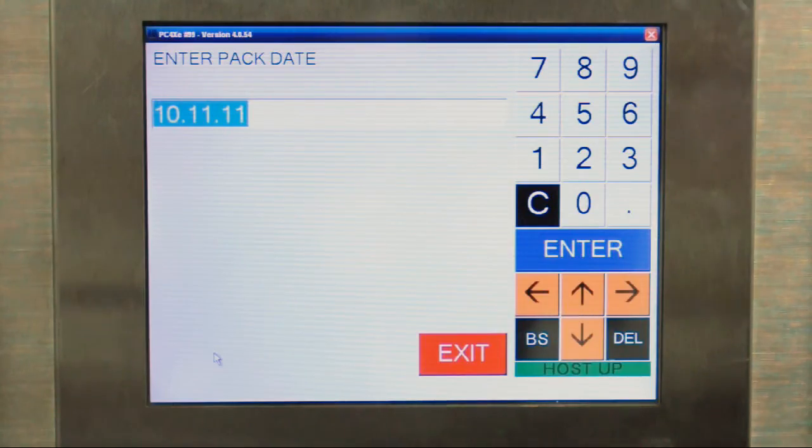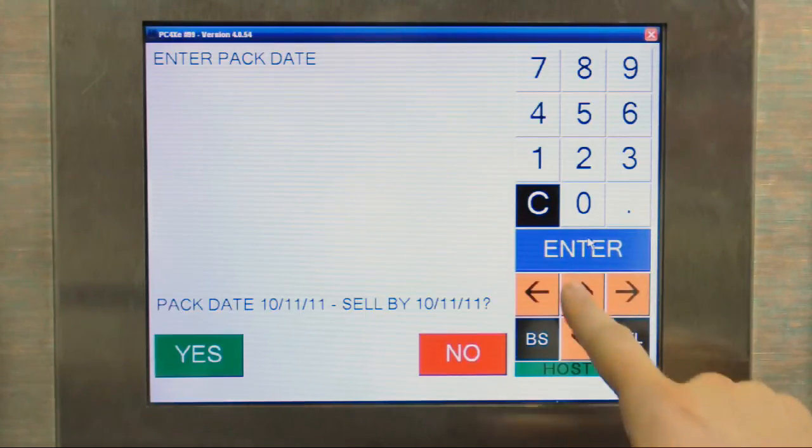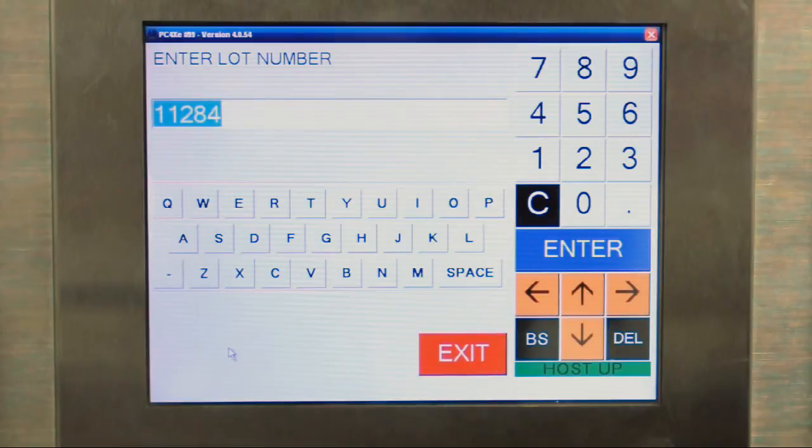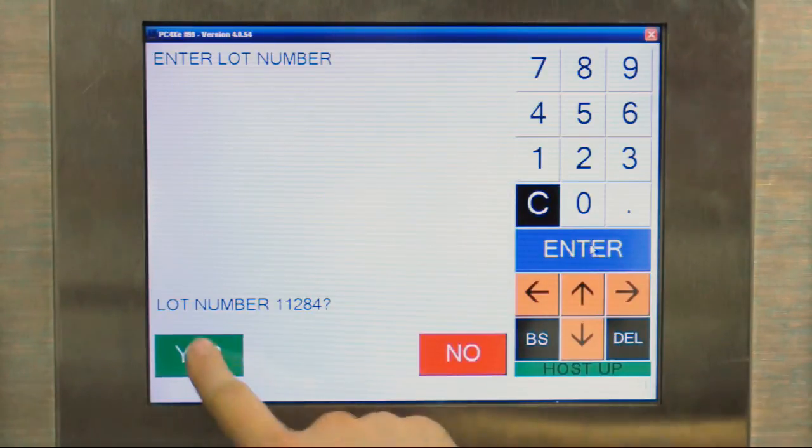Now it asks for the pack date. The pack date defaults to today's date. Vistatrack has the flexibility to change this if needed to match your production schedule. Confirm that. The lot number is automatically configured as a Julian date. You can also change this and enter in your own number if needed. Confirm that.